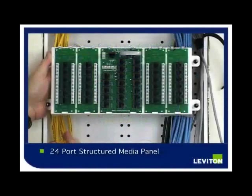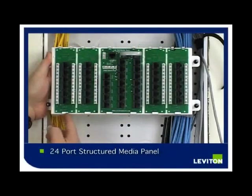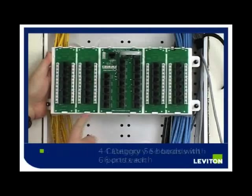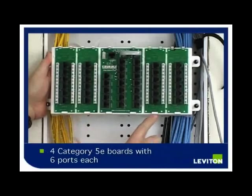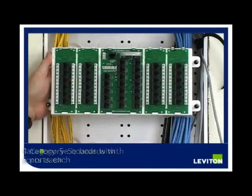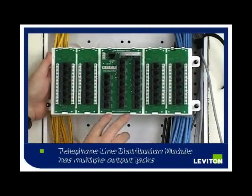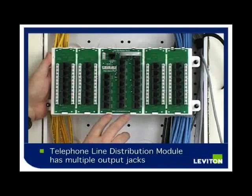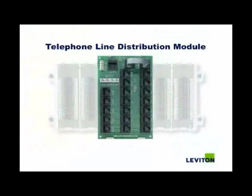This is a 24-port structured media panel which consists of four Category 5e boards, each with six ports. The center module is your telephone line distribution module, which allows you to route up to four telephone numbers throughout the house.